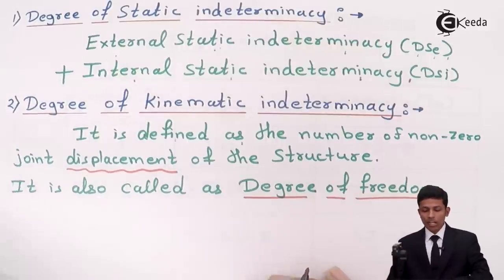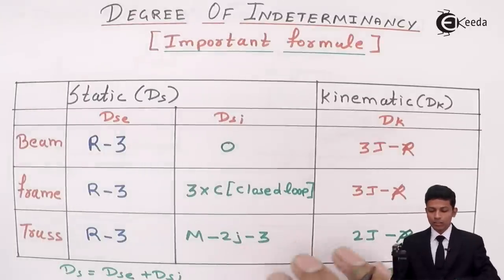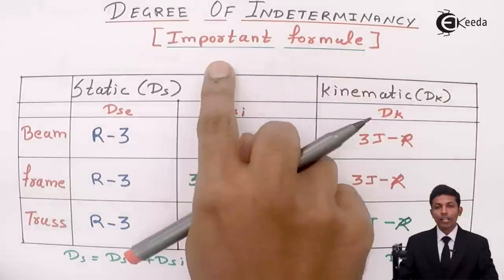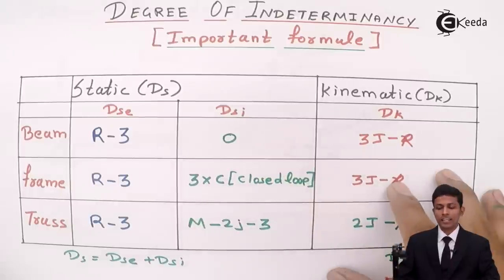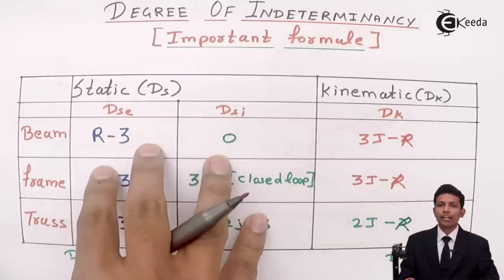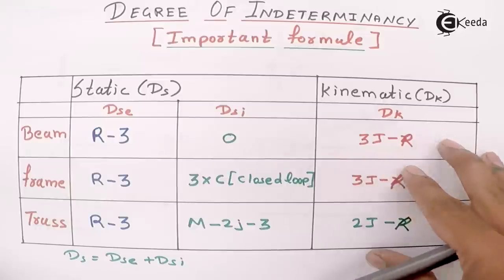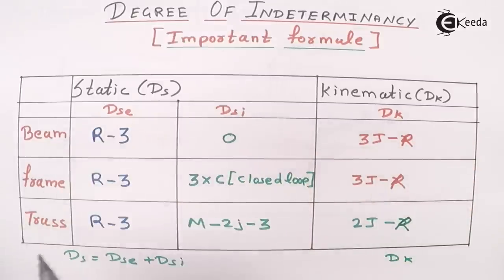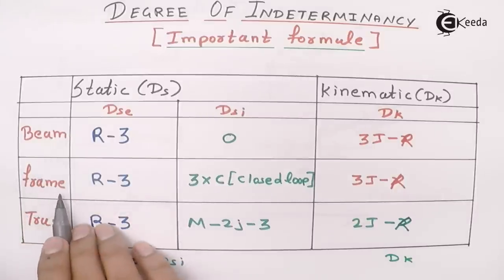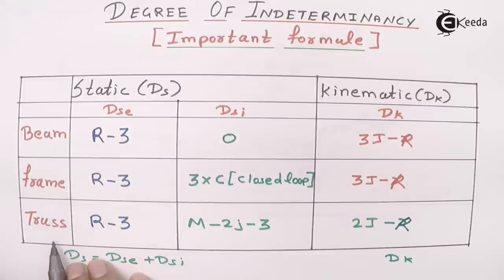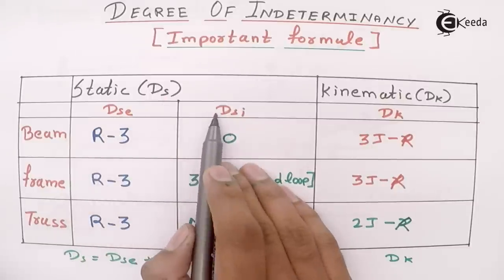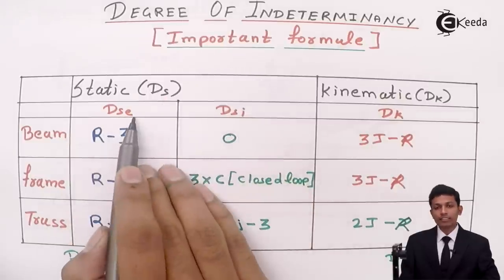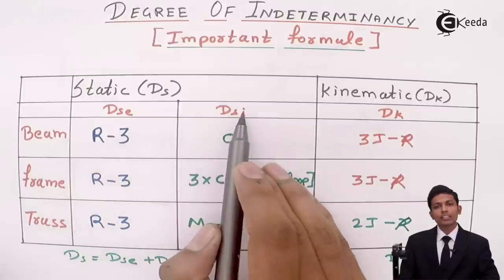I have made formulas for better understanding. DS is degree of static indeterminacy and DK is degree of kinematic indeterminacy. We will deal with three types of problems in this chapter: beam, frame, and truss.